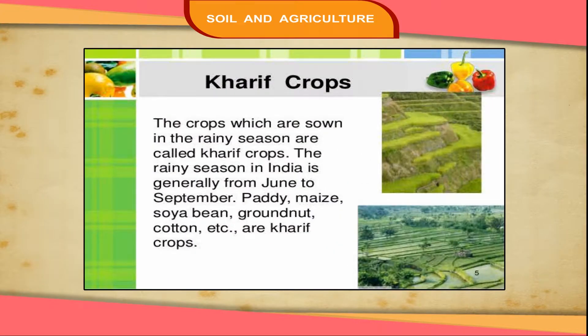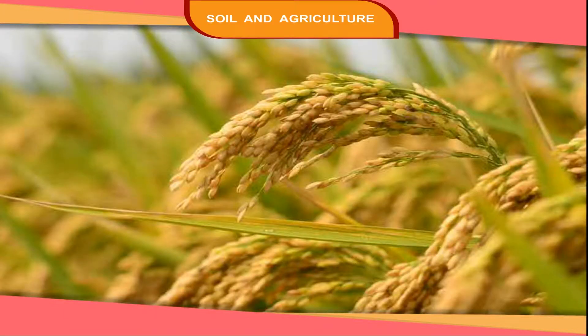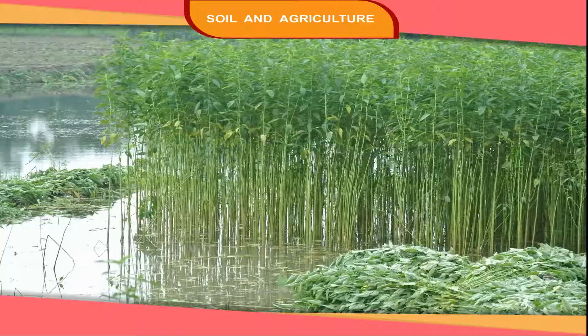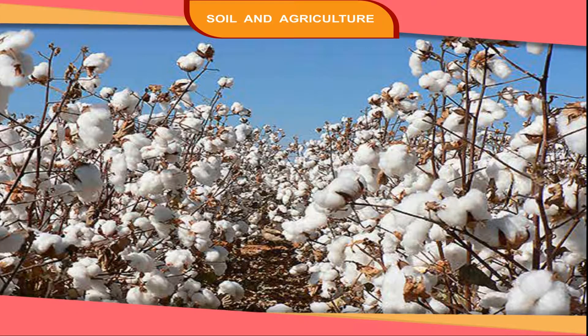The kharif season begins with the arrival of monsoon. Crops grown in this season are called kharif crops. These crops are paddy, millet, jowar, bajra, jute and cotton.